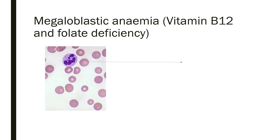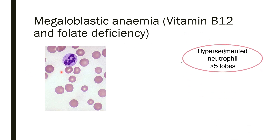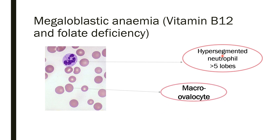In macrocytic anemia, if it is megaloblastic due to B12 and folate deficiency, hypersegmented neutrophils are always present — more than 5 lobes in the neutrophil is labeled as hypersegmented. Macro-ovalocytes are also seen because of B12 and folate deficiency.